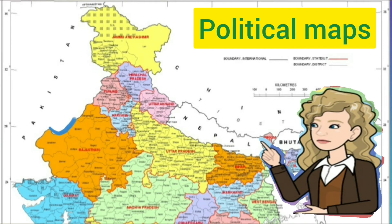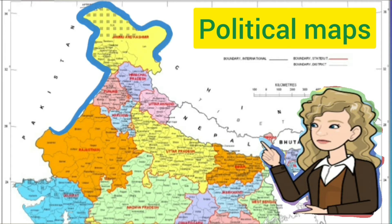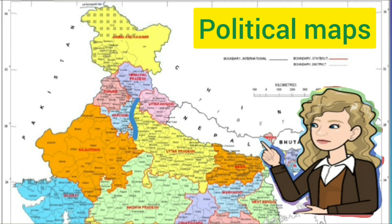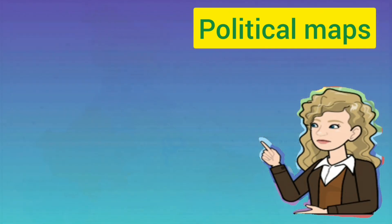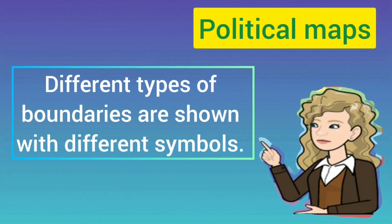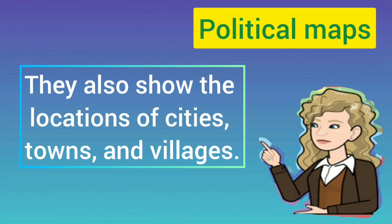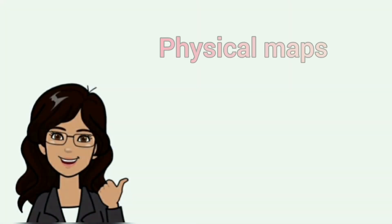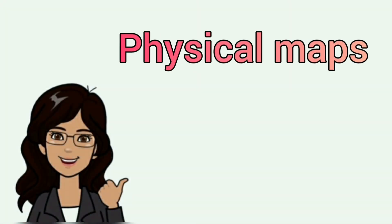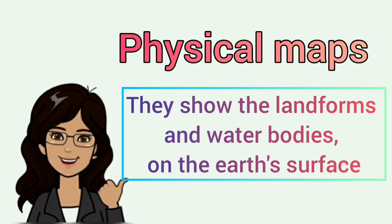Political maps show the boundaries of administrative units such as countries, states, and districts. Different types of boundaries are shown with different symbols. They also show the location of cities, towns, and villages.